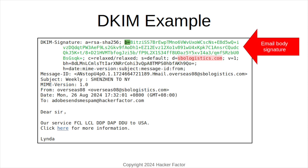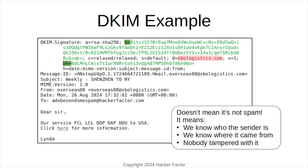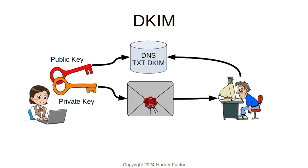The cryptographic signature gets compared against the header values, and it also checks the signature for the email's body. A signature match does not mean it's not spam — it means we know who the sender is, we know where it came from, and we know that nobody tampered with it. So that's how DKIM protects email.